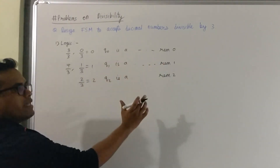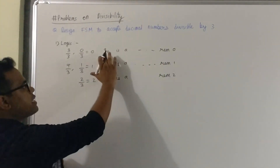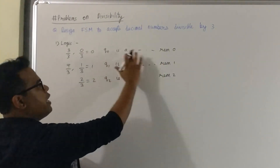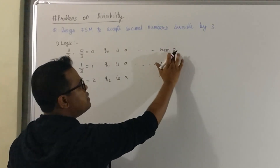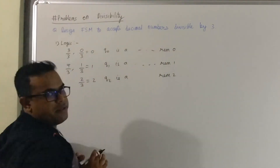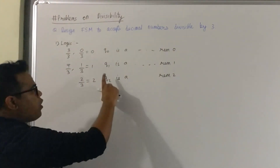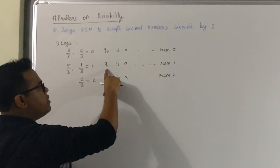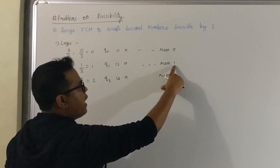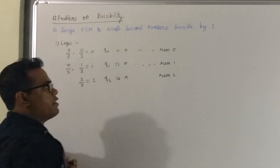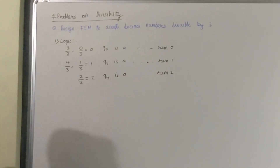Q0 is a state which represents remainder 0. Q1 is a state which represents remainder 1, and Q2 is a state which represents remainder 2. So however many remainders there are, that many states will be formed. When the automata is in Q0, it means it has 0 with it. When the automata is in Q1, it means it has 1 with it.